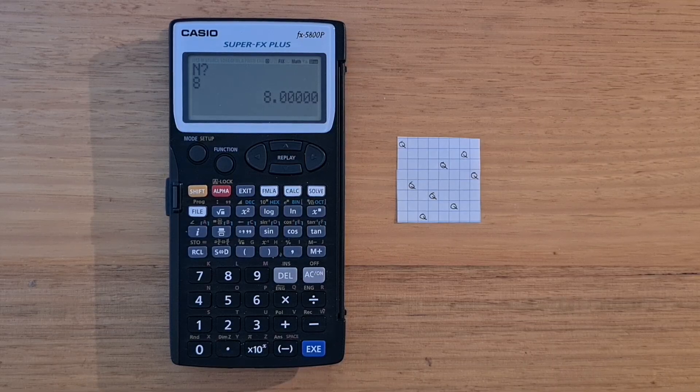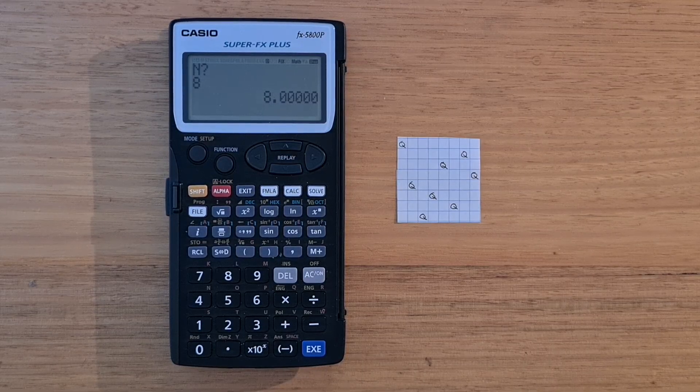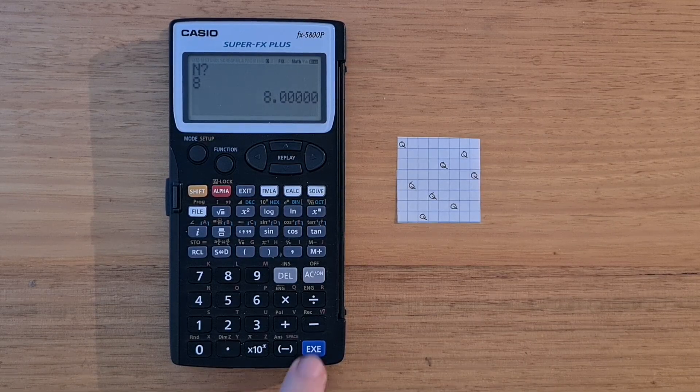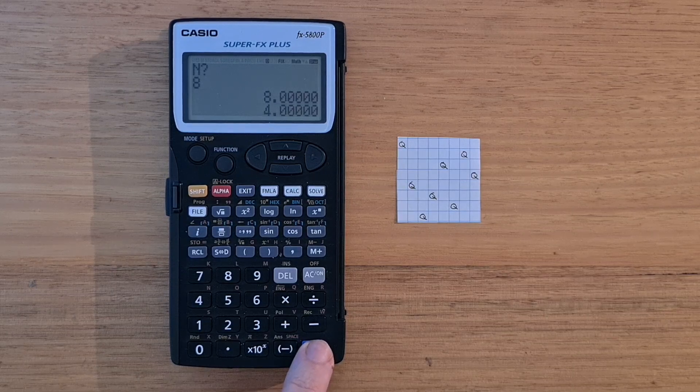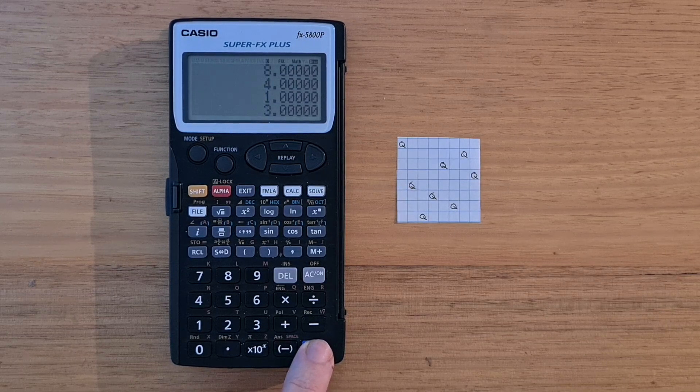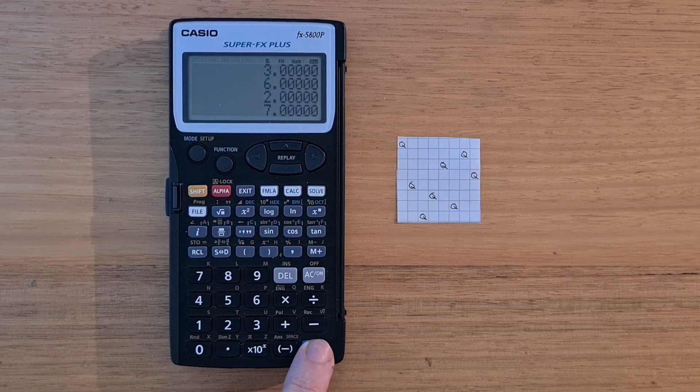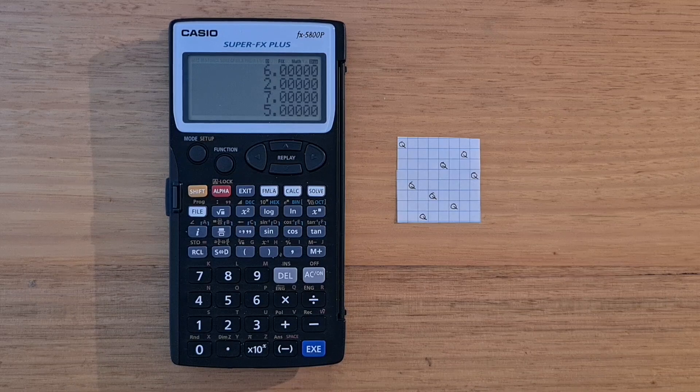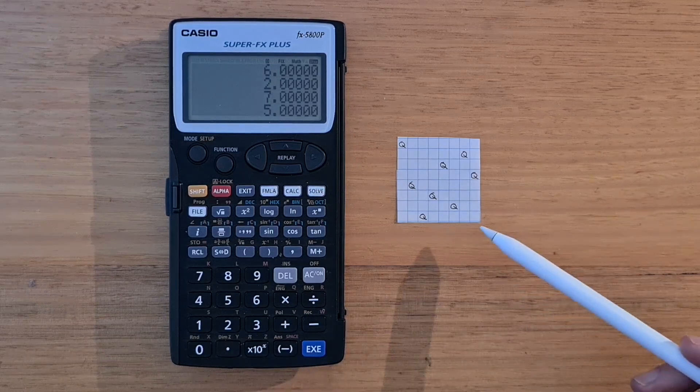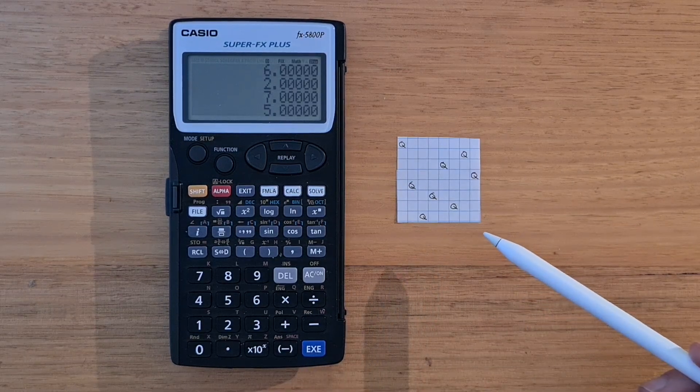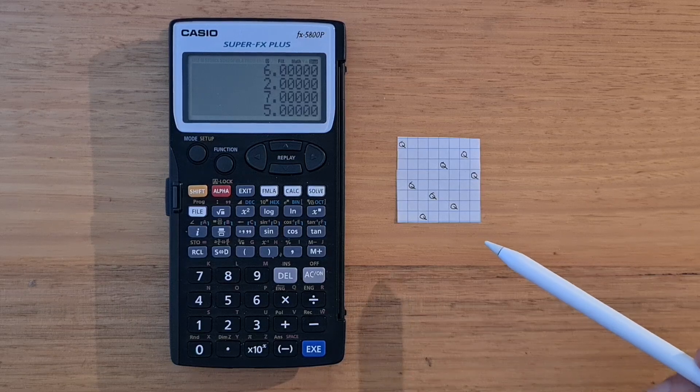And so the program's finished now. And the solution it found is where Queens are on ranks 8, 4, 1, 3, 6, 2, 7, and 5. And so no Queen is on the same rank file or diagonal as another.